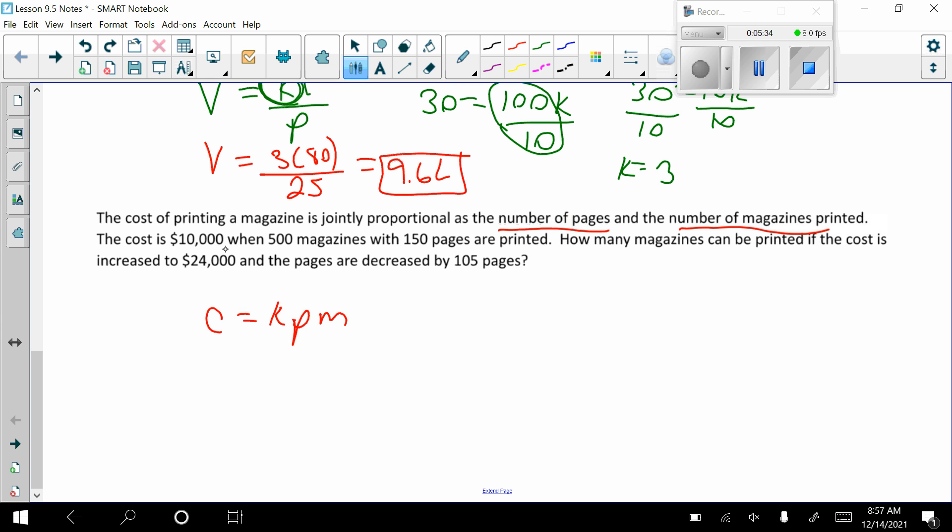Okay. The cost is 10,000 when 500 magazines, so that's our M, and 150 pages are printed, that's our P. So 150, 500, we're going to solve for K. So go ahead and do that. So I showed my work over here, but I found that K is equal to 2 over 15.